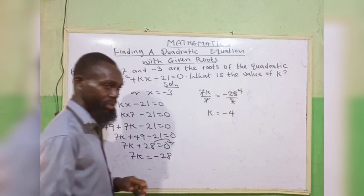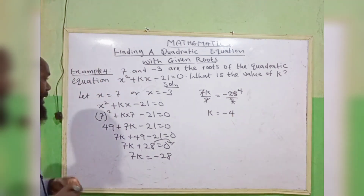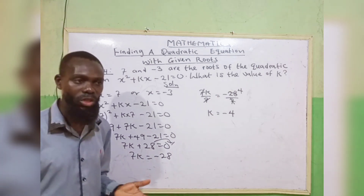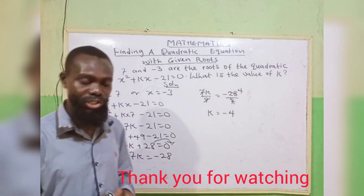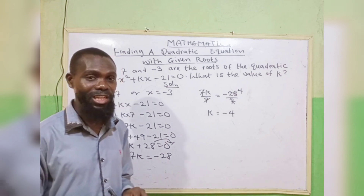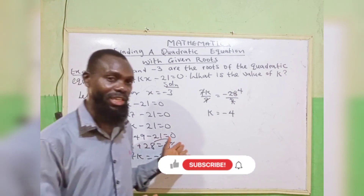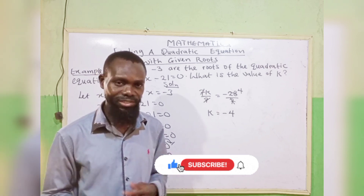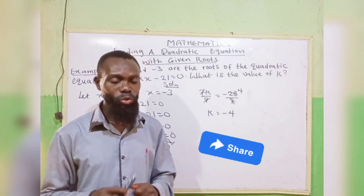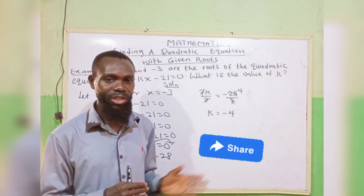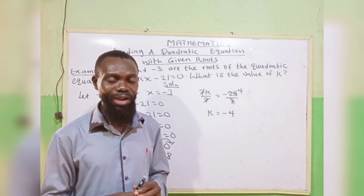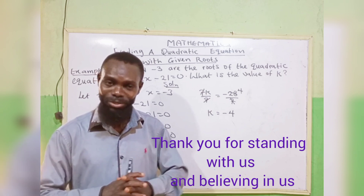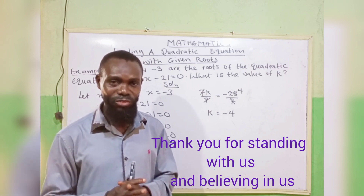So the value of k is minus 4, and using minus 3 as the root gives the same answer. Thank you for watching. If you are a new member, kindly subscribe and click the notification bell for subsequent lessons. Share with other learners, and to our regular members, thank you for standing with us. Thank you very much.